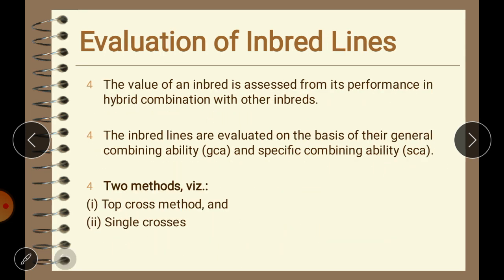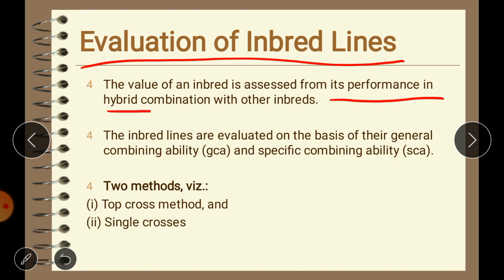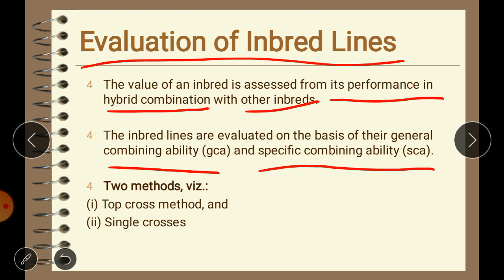The second step is evaluation of inbred lines. The value of an inbred is assessed from its performance in hybrid combination with other inbreds. Inbred lines are evaluated on the basis of their general combining ability and specific combining ability. We can assess their performance by checking which combination of inbreds gives superior performance. There are two methods: the top cross method and the single cross method.